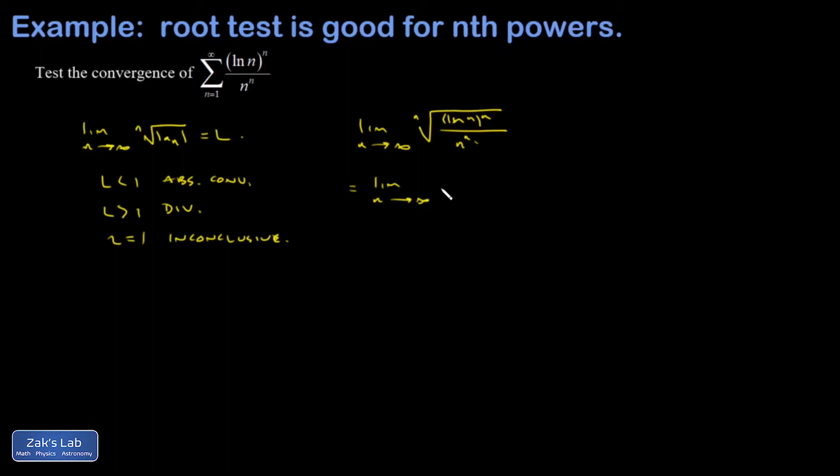You could call it an exponent of 1 over n if you wanted, and then multiply the exponents and n times 1 over n is 1. And the bottom line is the nth root undoes nth powers. So my life just got a lot easier.